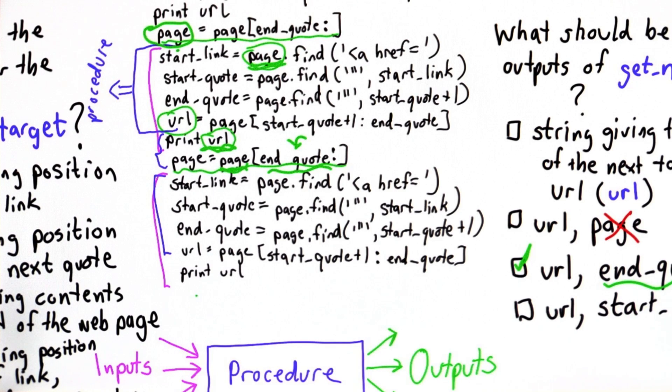So now that we know the inputs and the outputs, the procedure almost writes itself, especially since we already know the code that we want to execute before we define the procedure.